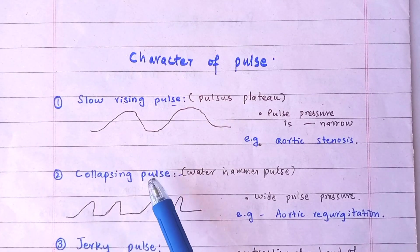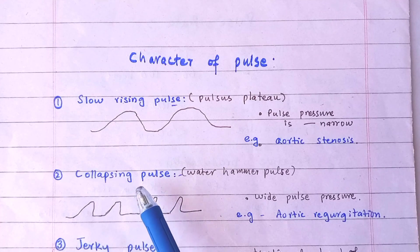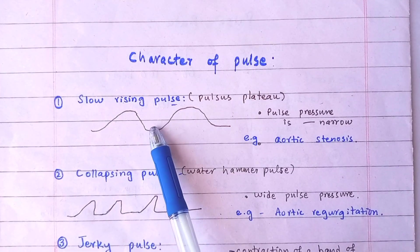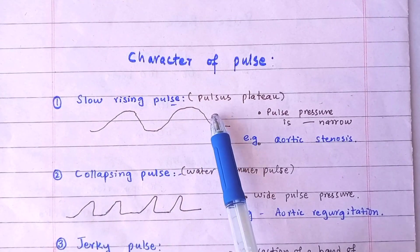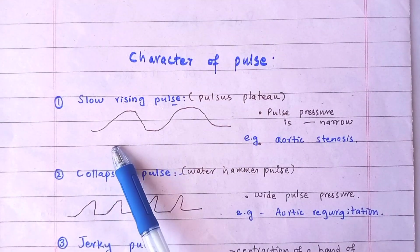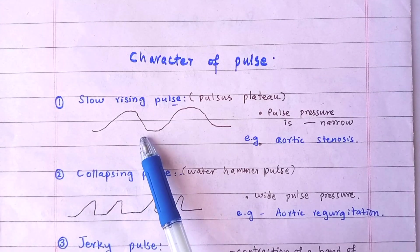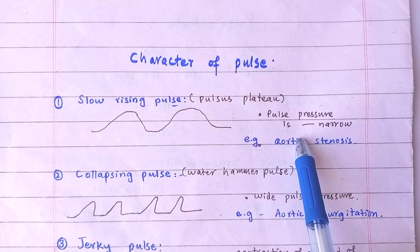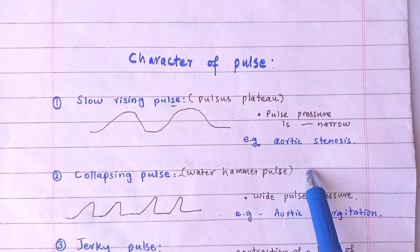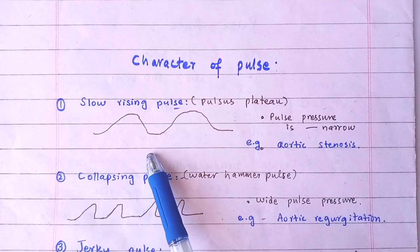In this video I will tell you about certain characters of pulse. First, Slow Rising Pulse, also called pulsus plateau. It is a low volume pulse that rises slowly and stays longer with a palpating finger. Pulse pressure is narrow. It occurs in aortic stenosis. The waveform of slow rising pulse is like this.